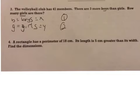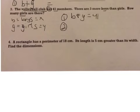We have two equations. Equation one comes from right here: the volleyball club has 41 members. You have to ask yourself, who is the volleyball club made out of? It's made out of boys plus girls. So our first equation is boys plus girls equals 41 members.